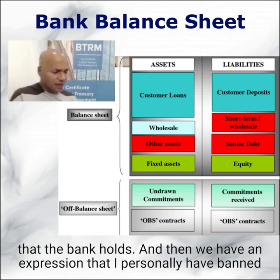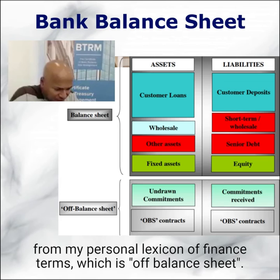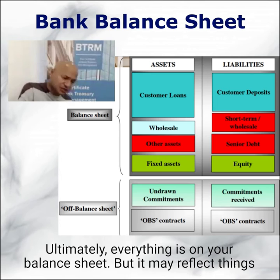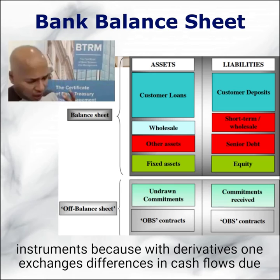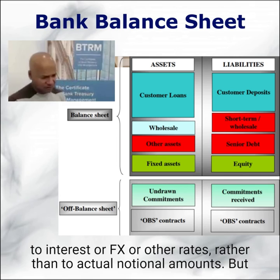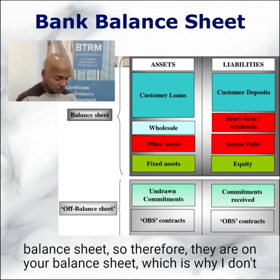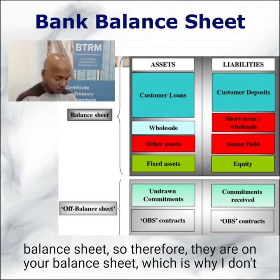And then we have an expression that I personally have banned from my lexicon of finance terms, which is 'off-balance sheet.' Ultimately, everything is on your balance sheet, but it may reflect things such as undrawn commitments, liquidity lines offered to banks that haven't been drawn down yet, and similarly commitments received. It will include derivative instruments, because with derivatives one exchanges differences in cash flows due to interest, FX, or other rates, rather than actual notional amounts. But ultimately they do impact your balance sheet — your risk management balance sheet — so therefore they are on your balance sheet, which is why I don't like that expression. But you should be familiar with it, because you'll come across it a lot.